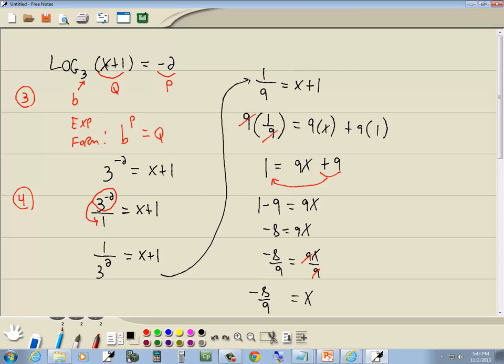Let's plug that back in to our original problem. If I put negative 8 ninths here, I've got negative 8 ninths plus 1, which gives me a positive 1 ninth, which is not 0. So this checks. And that's our answer. And that's my suggestion. Thank you.